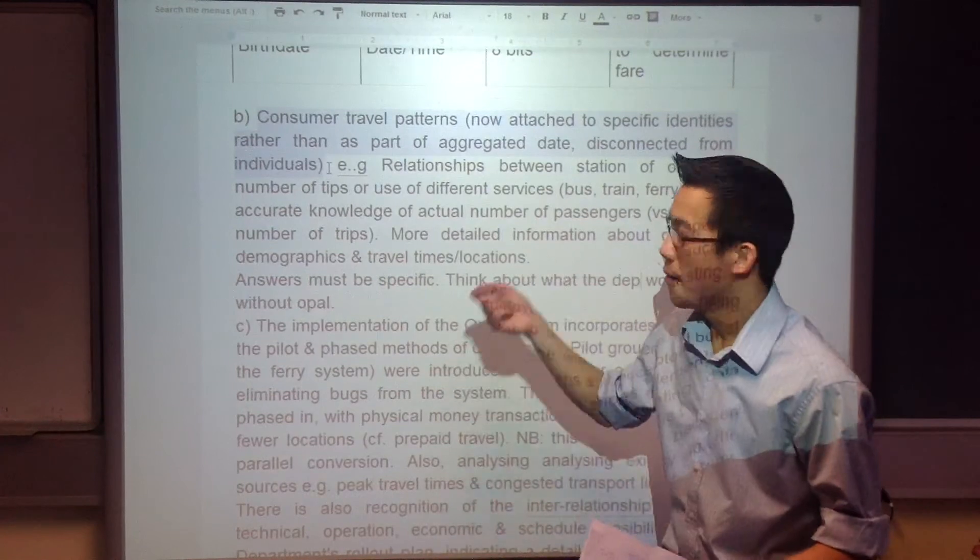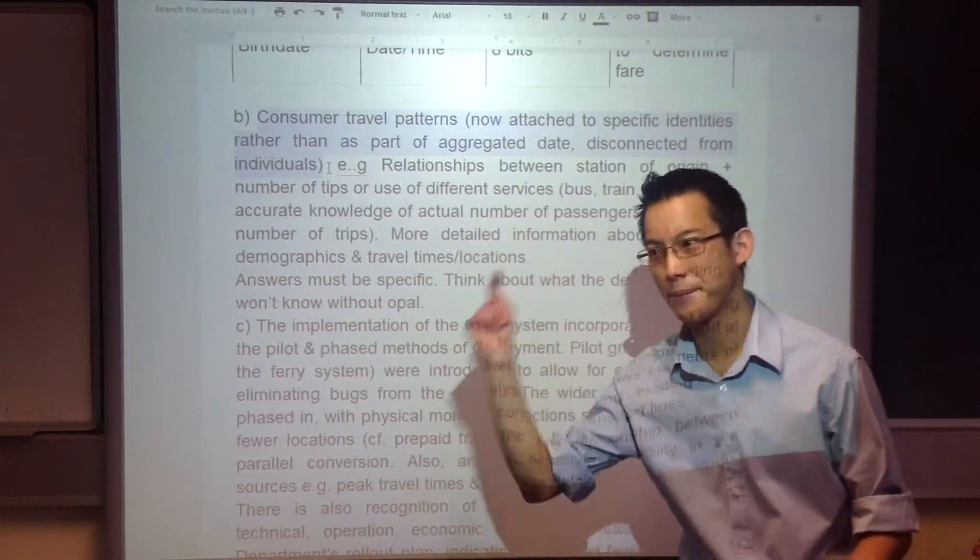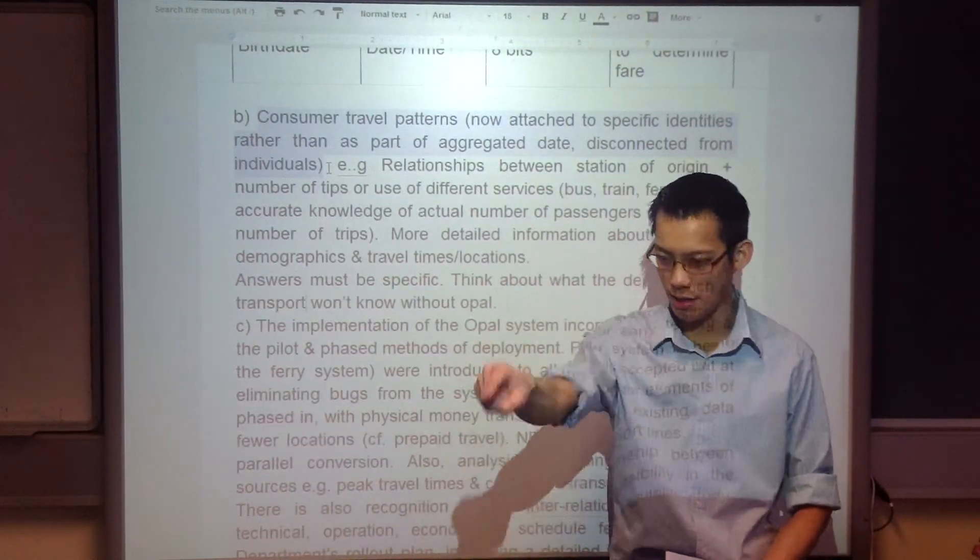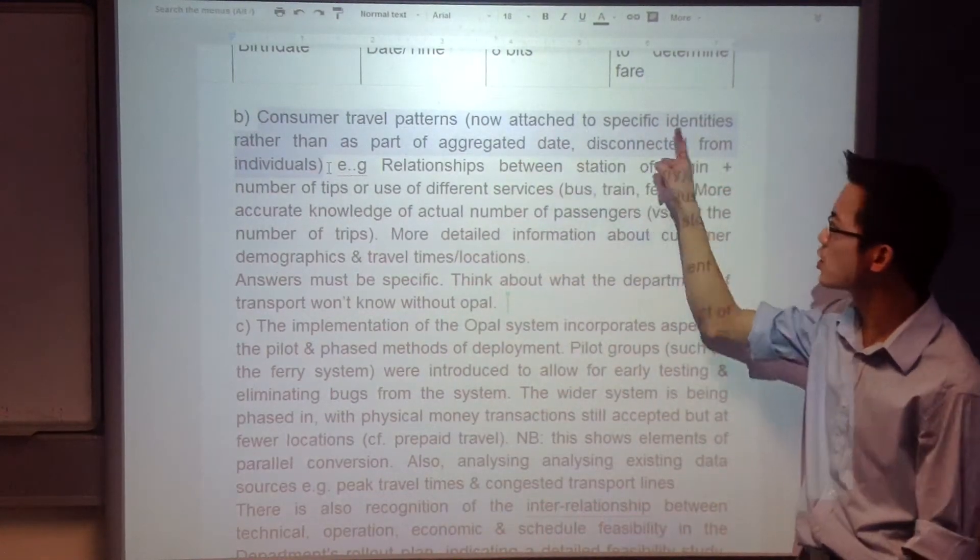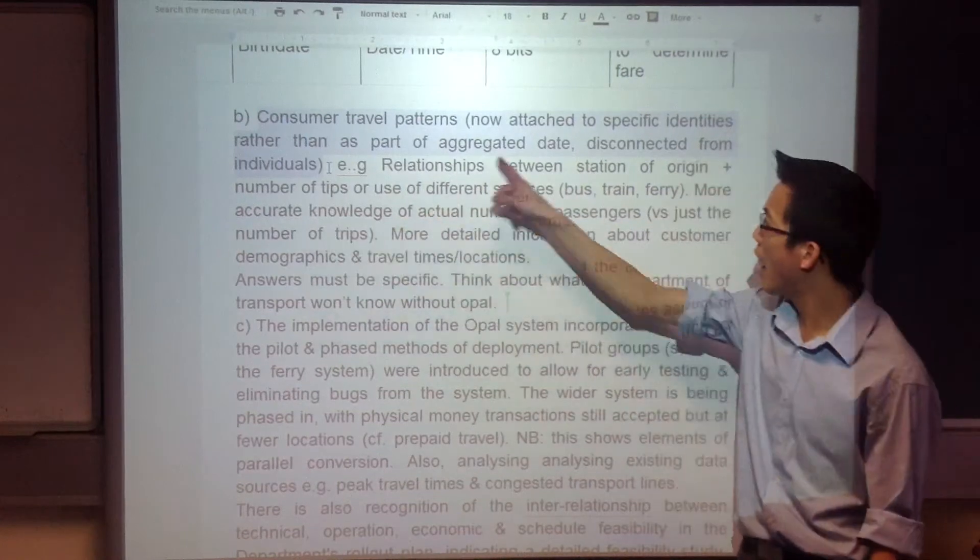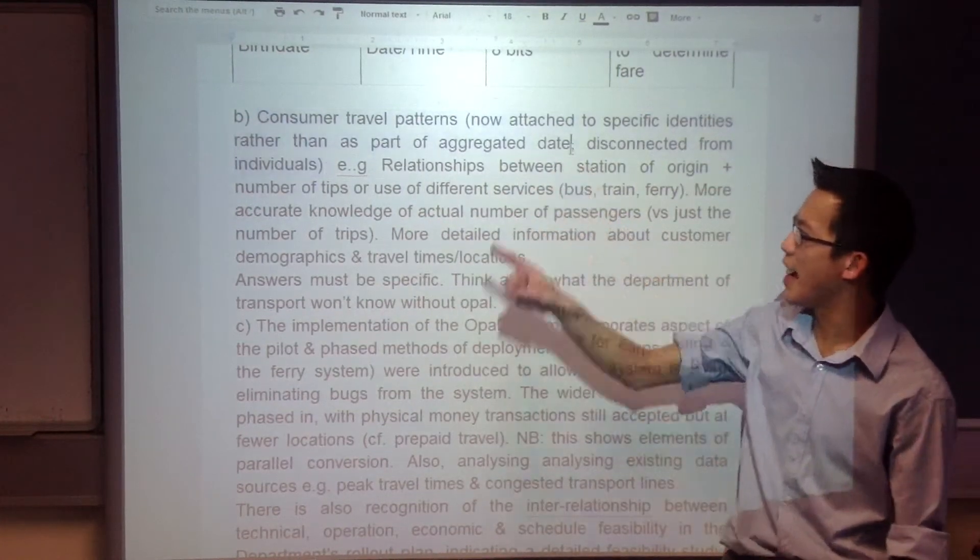Or three tickets or four or five. But now every time I swipe on they know it's the same number, it's the same one. They go to this station and that station and then five times a day they're going, right? So that's why I say it's attached to a specific identity.